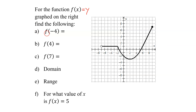In part a, we have to find the value of the function f at negative 4. Notice the x is being replaced by negative 4. So we know that x equals negative 4. And f of negative 4 is the y value of the point on the graph when x equals negative 4. So let's find x equals negative 4. Start at the origin and go 4 to the left. Here's x equals negative 4. Is there a y value for that x value on the graph? Yes, this is the point on the graph where x equals negative 4.